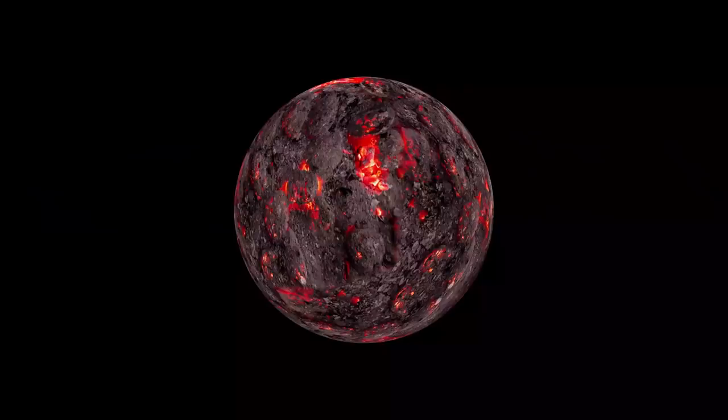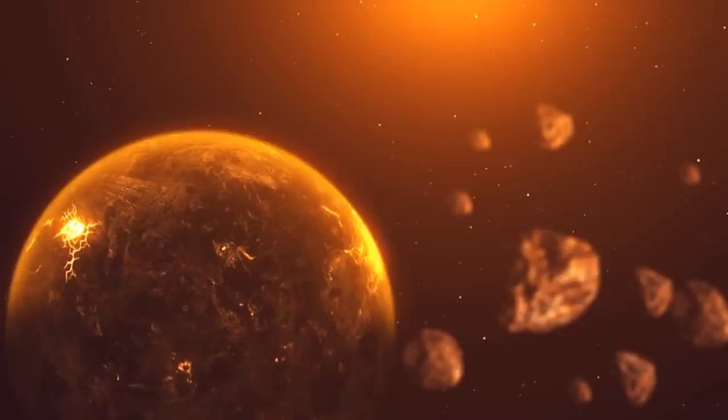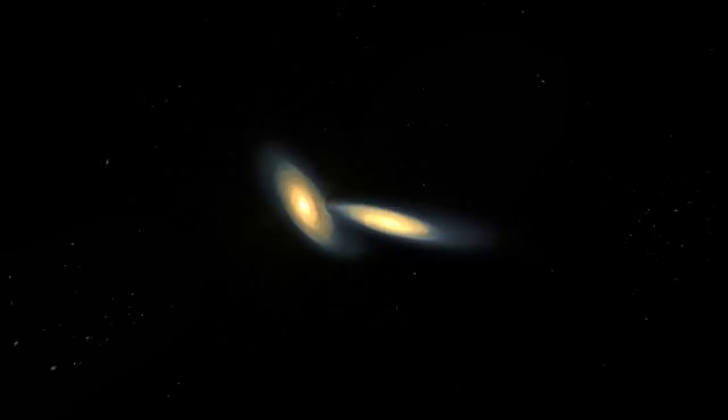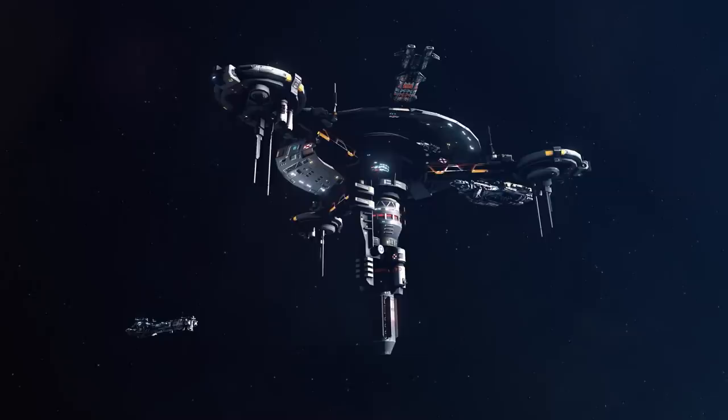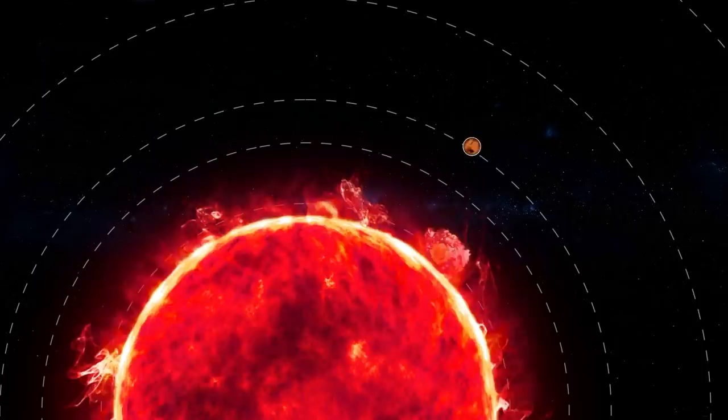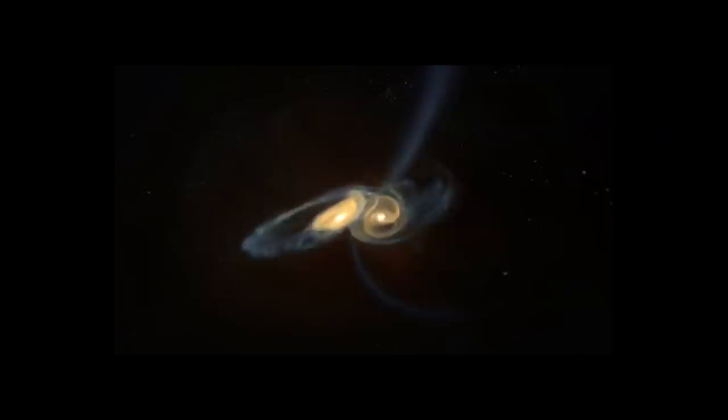And our planet Earth will never again be a blue oasis in a dark, lifeless space. Its appearance will change forever, and nothing will remind you that there was once life here. Therefore, regardless of whether the Andromeda and the Milky Way galaxies will collide once or simply pass by each other, nothing will really change for humanity. By the time of the collision, we will have to leave our home planet and get as far away as possible. Farther from the moment when the solar system will be thrown out of the galaxy, when the Sun turns into a red giant and destroys our planet, and when two supermassive black holes of two galaxies merge together.